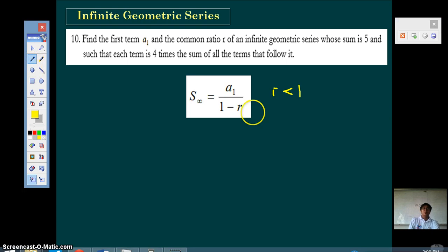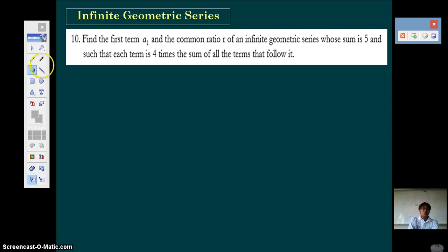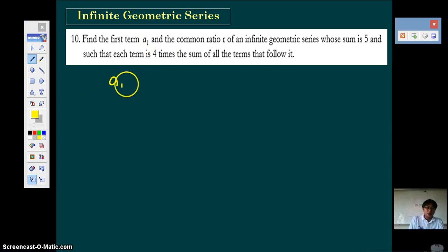Now let's begin answering this problem. Find the first term a1 and the common ratio r of an infinite geometric series whose sum is 5 such that each term is 4 times the sum of all the terms that follow it.